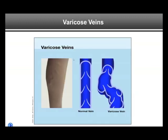Varicose veins often are also clinically not that relevant in the sense that most people with varicose veins do not develop DVT or PE, the more dangerous clots. Varicose veins, as you can see here, have a sausage-like or worm-like appearance due to structural abnormalities. Clots can form in these widened varicose veins, and those superficial clots are typically also not dangerous, even though they can be quite painful.